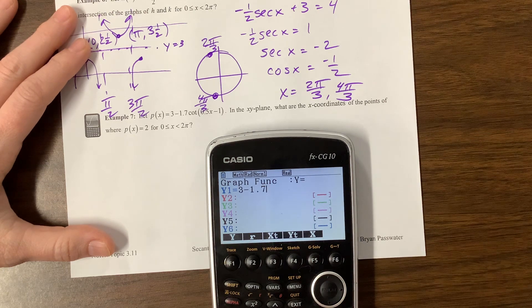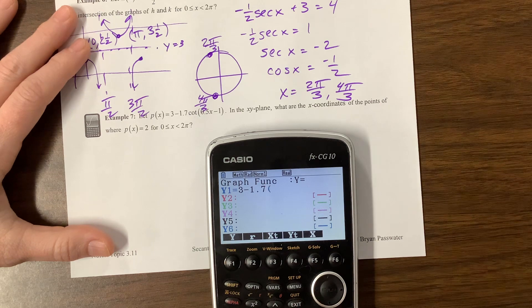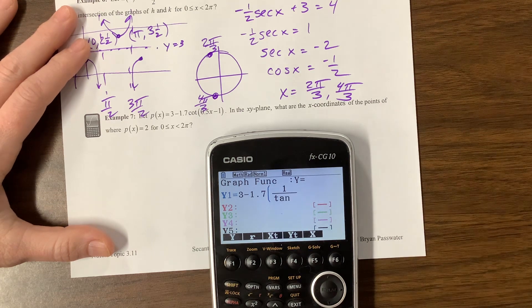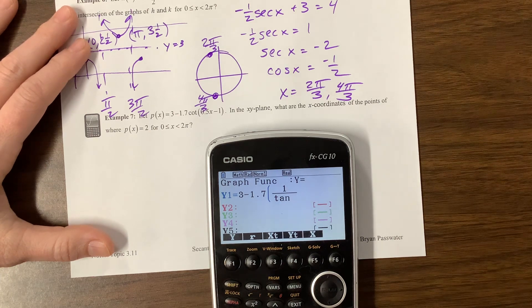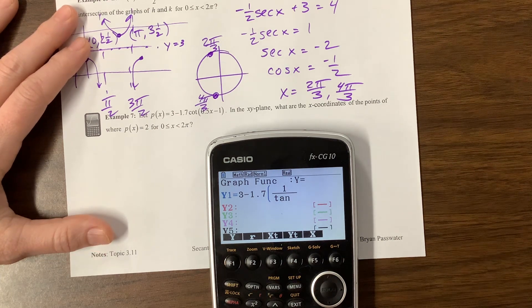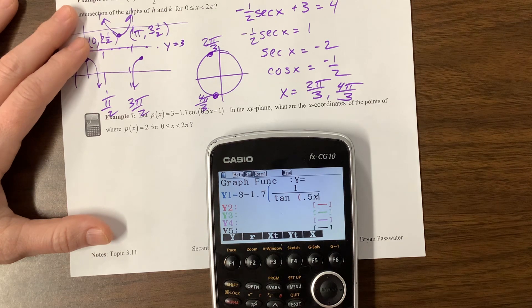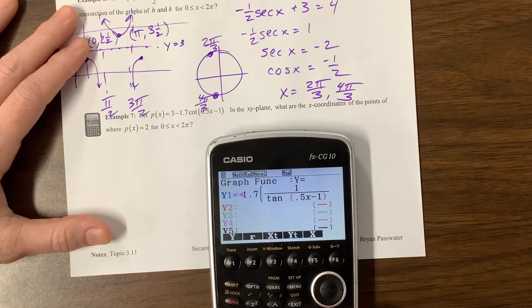I see 3 minus 1.7 cotangent. Ah, okay, so with this, cotangent is 1 over tangent. There is not a cotangent button on the calculator. And so then this becomes, in here we have a 0.5x minus 1. Maybe I should have thought through this one a little bit ahead of time. Let's see what happens.